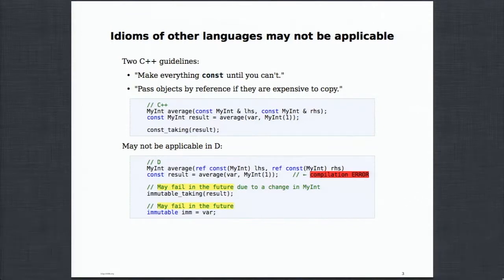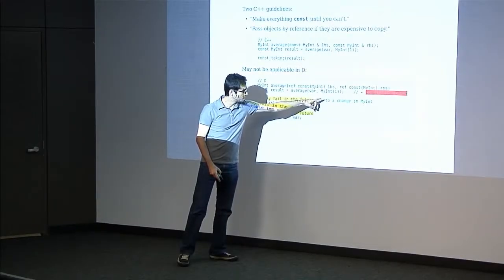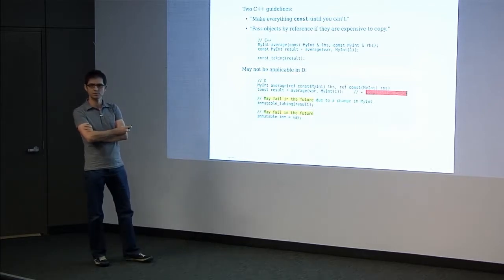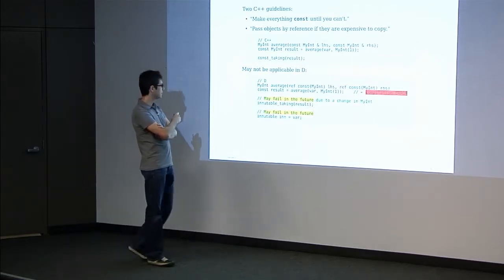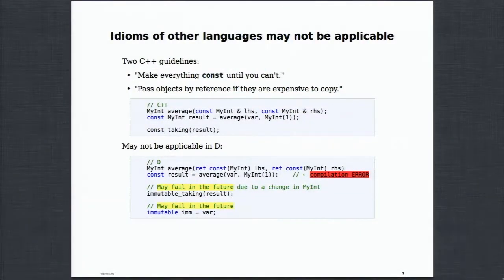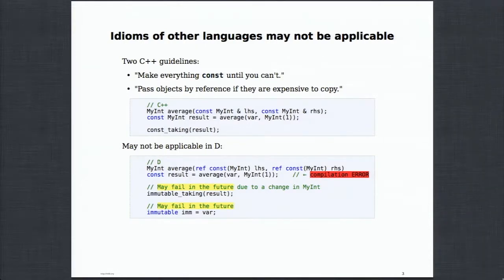These C++ guidelines are not applicable in D. A one-to-one translation attempt results in problems: in D, you cannot bind R values to references, even if they are const references. And if you're using an immutable-taking function and passing a const to it, that may fail in the future if the library implementing that type makes a well-encapsulated private modification to it. That's why we need better things. Coming from C++, applying those is a hurdle — it's friction.